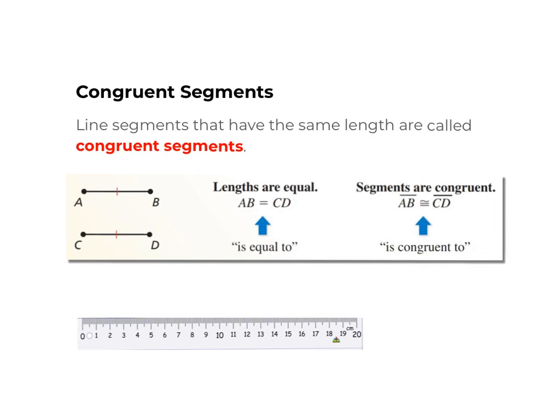Now we have a new symbol here. It is a squiggly line above an equal sign. This is called congruent symbol. We will use it a lot in our future lessons.